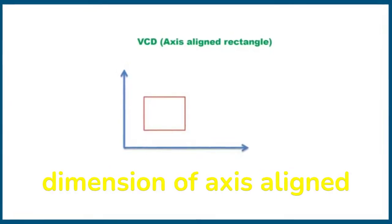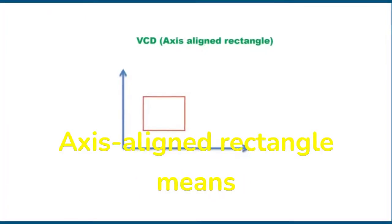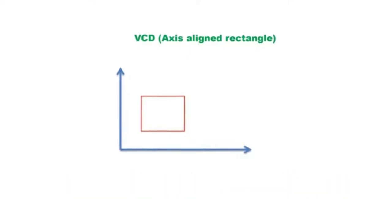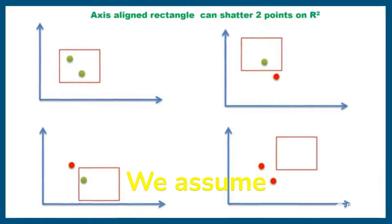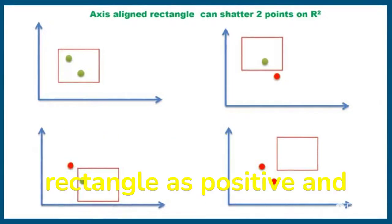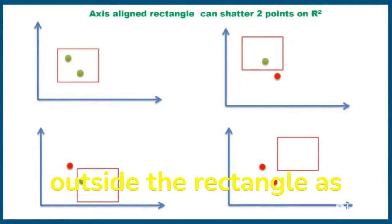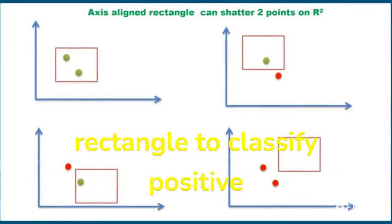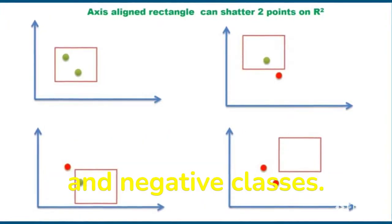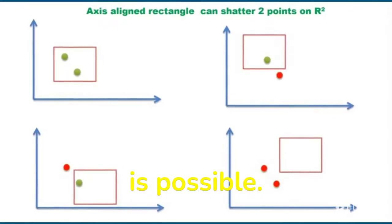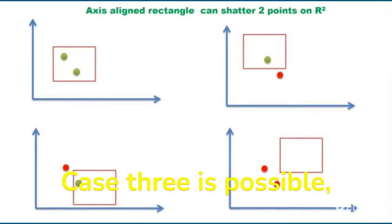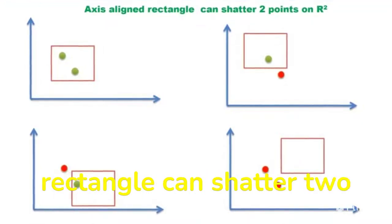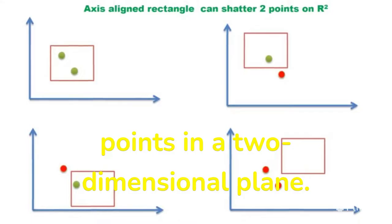VC dimension is one measure that characterizes the expressive power or capacity of the hypothesis class. Now find the VC dimension of an axis-aligned rectangle. An axis-aligned rectangle means the edges of the rectangle are parallel to the coordinate axes. We assume all data points inside the rectangle are positive and outside the rectangle are negative. For two data points, it is possible to draw an axis-aligned rectangle to classify all four cases of positive and negative classes correctly. Hence, the axis-aligned rectangle can shatter two points in a two-dimensional plane.